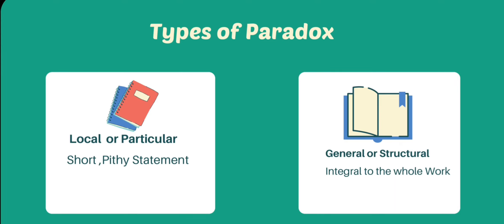Basically, two types of paradox may be distinct: local or particular. Local paradox is short, pithy statement, which works on the epigram, such as Hamlet's line: I must be cruel only to be kind, or Congreve's neat turn of phrase in Amoret: Careless she is with artful care, affecting to seem unaffected.